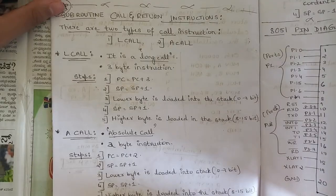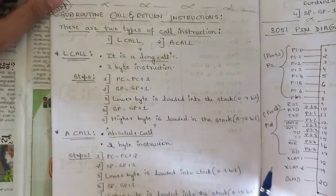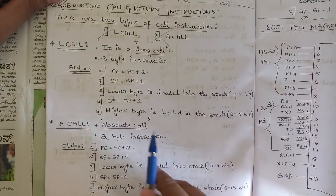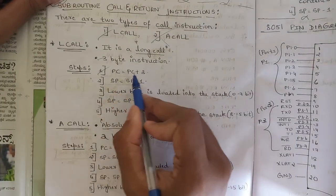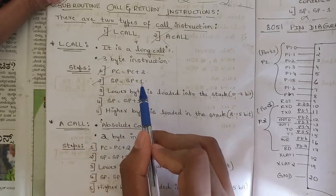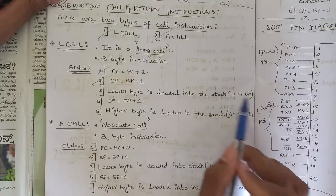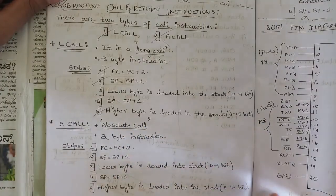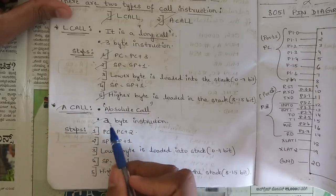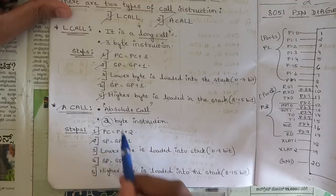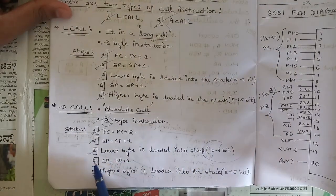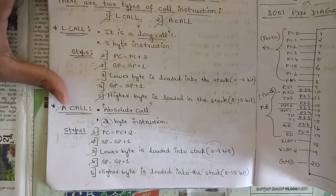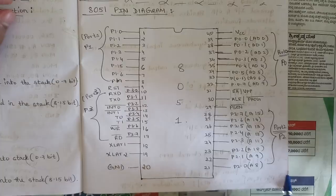An important topic is subroutine call and return instructions. There are two types of call instructions: LCALL (long call), which is a 3-byte instruction, and ACALL (absolute call), which is a 2-byte instruction. For LCALL: PC = PC + 3, then SP = SP + 1, lower byte of PC is pushed to the stack, SP = SP + 1 again, then the higher byte is pushed. For ACALL: PC = PC + 2, then the same stack push procedure follows for lower and higher bytes.